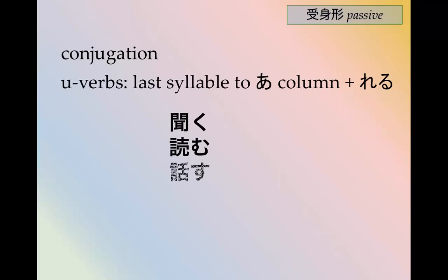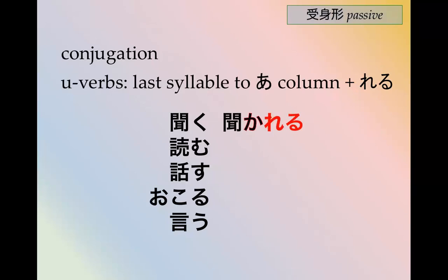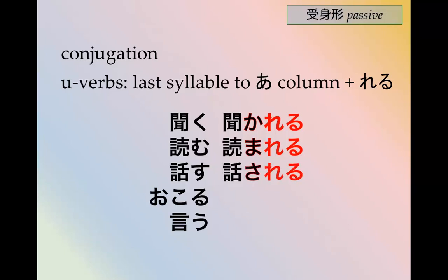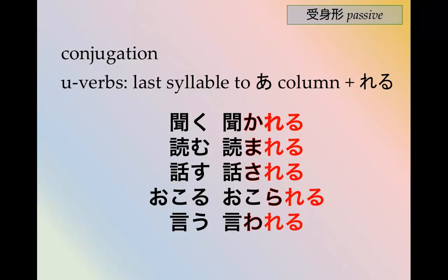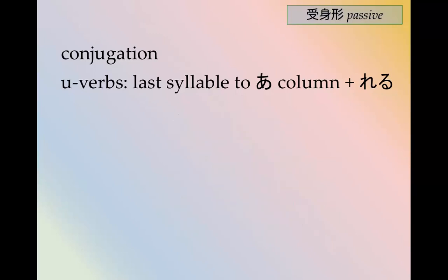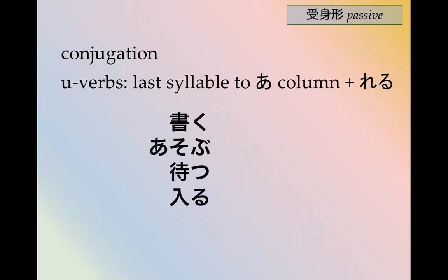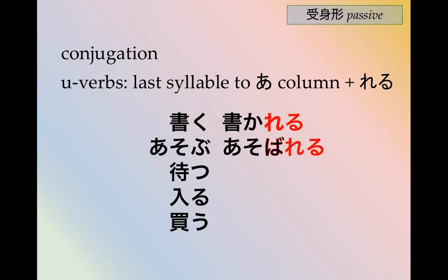For う verbs, you change the last syllable to the あ column, like in the negative, and then add れる. So 聞く becomes 聞かれる, 読む becomes 読まれる, 話す becomes 話される, 怒る becomes 怒られる, 言う becomes 言われる. Some more: 書く becomes 書かれる, 遊ぶ becomes 遊ばれる, 待つ becomes 待たれる, 入る becomes 入られる.